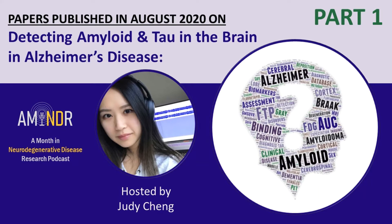Hi everyone, my name is Judy Chang and I will be your host for this episode of Aminder. Today we will be covering part 1 of 2 on amyloid or tau protein detection in the brain. These papers were all published in August 2020 and include a variety of methods for targeting these proteins. I'll be going over 12 papers in total in this episode and all of them involve positron emission tomography, which I'll be referring to as PET.